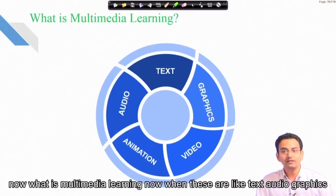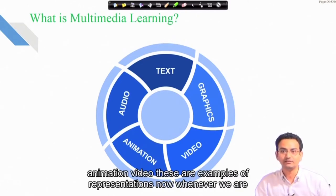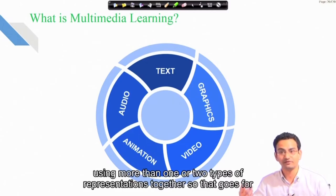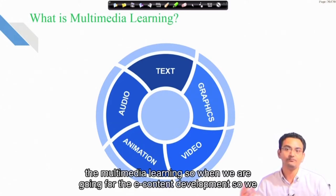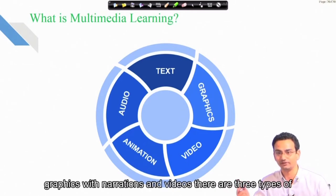What is multimedia learning? Text, audio, graphics, animation, and video are examples of representations. Whenever we use more than one or two types of representations together, that constitutes multimedia learning. So when we are developing e-content, we must go for multimedia learning — using either animations with text, or graphics with narrations and videos.